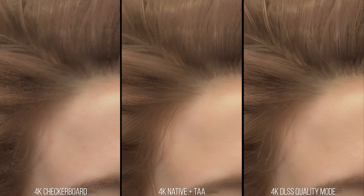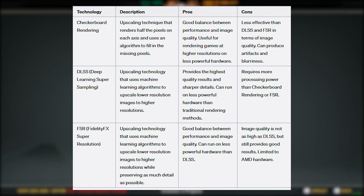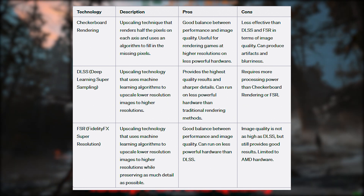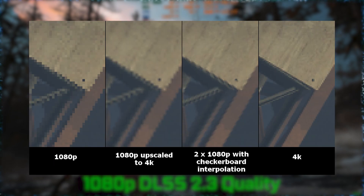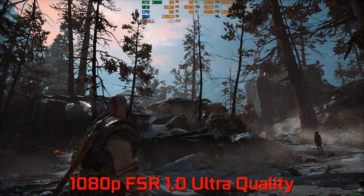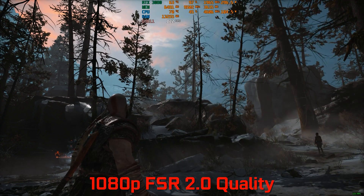However, this technology from Sony may not be as effective as other upscale technologies such as DLSS or FSR, which use machine learning algorithms to provide higher quality results. Checkerboard rendering is not as effective as FSR and DLSS in terms of image quality because it uses a simple algorithm to fill in the missing pixels when upscaling an image, whereas FSR and DLSS use sophisticated machine learning algorithms.